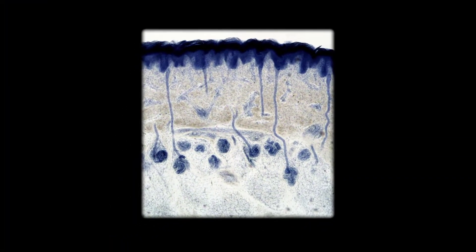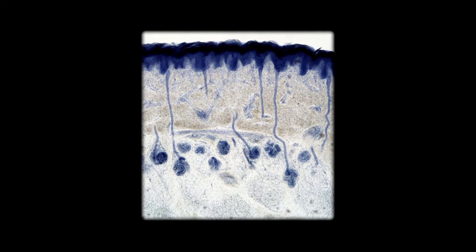For example, watery mucous containing the glycoprotein mucin is a merocrine secretion. The eccrine glands that produce and secrete sweat are another example.